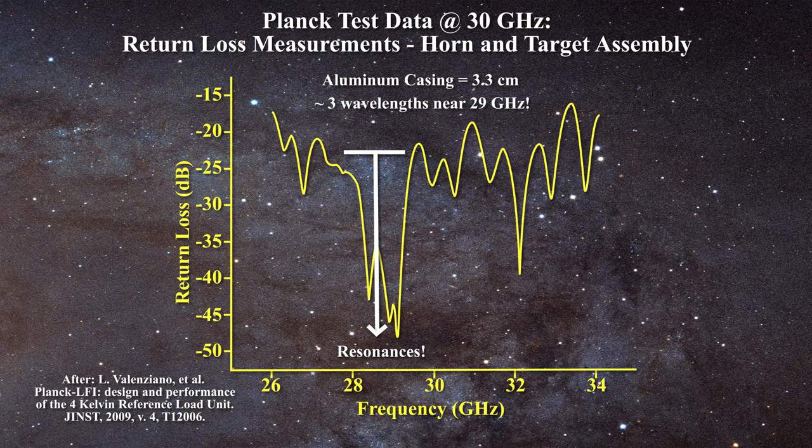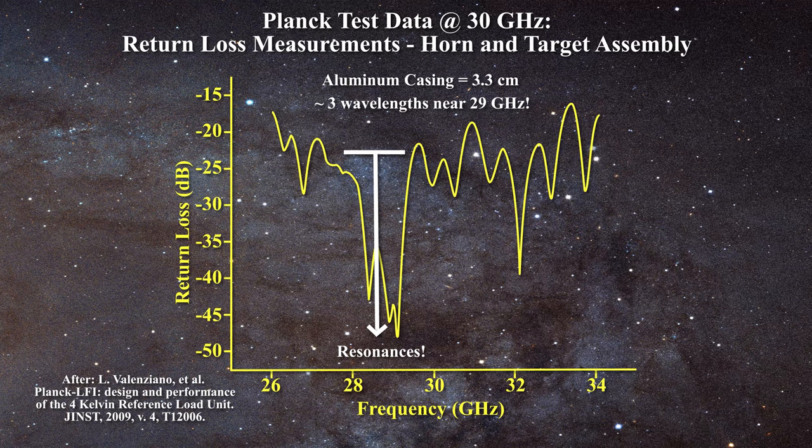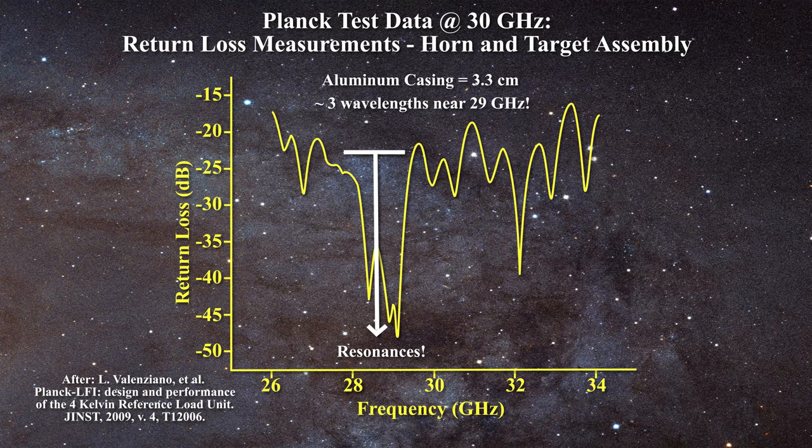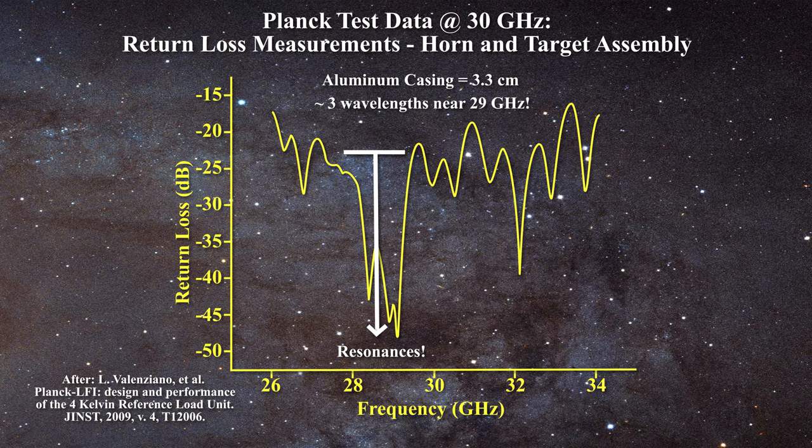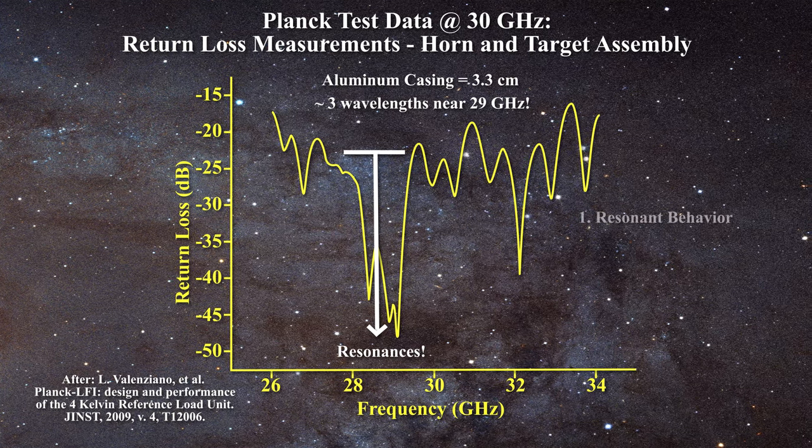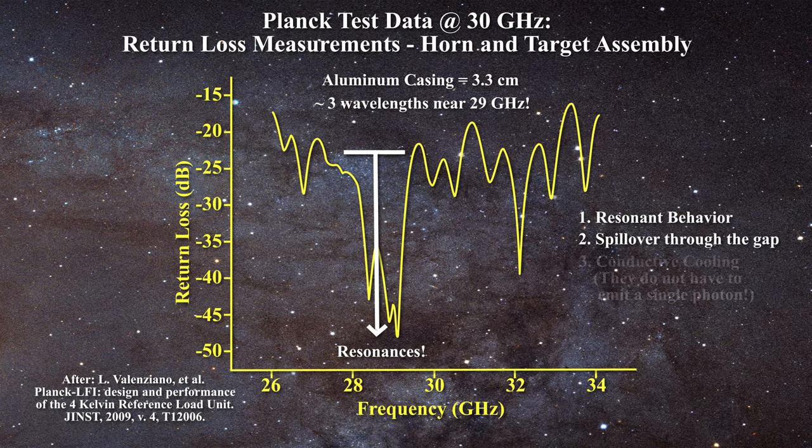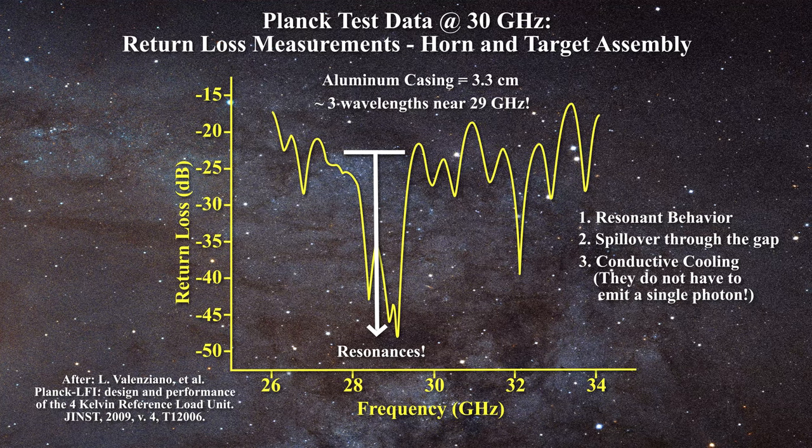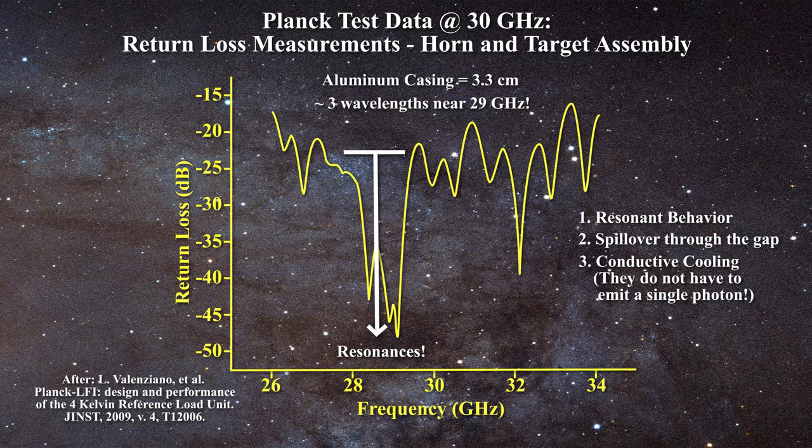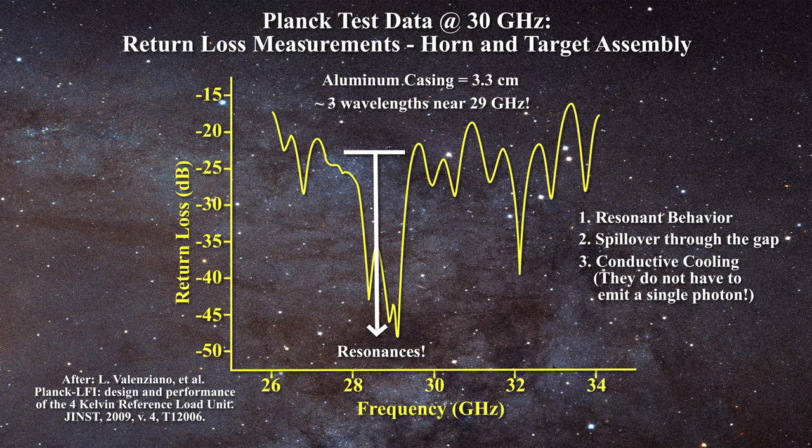Similar resonant behavior is observed at both 44 and 70 GHz. The Planck team cannot permit the existence of standing waves within the targets, as this is a sure sign that they are not properly acting as blackbodies. When this resonant behavior is taken in combination with the spillover through the gap, and the fact that the reference loads are being conductively cooled and do not have to emit a single photon to maintain their 4 Kelvin temperature, it is clear that significant problems exist with the 4K reference loads on the Planck satellite.